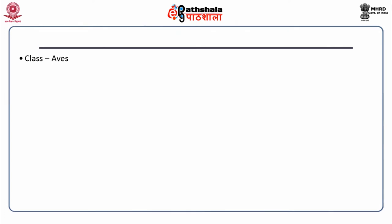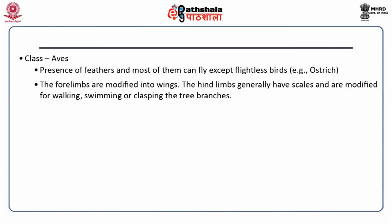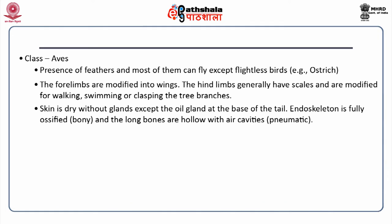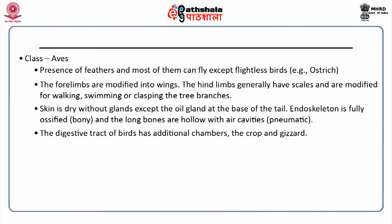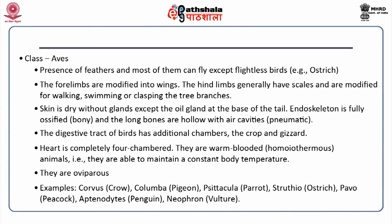Class aves is a special class. The presence of feathers distinguishes them, and most can fly except flightless birds like ostrich. Forelimbs are modified into wings. Hind limbs generally have scales and are modified for walking, swimming or clasping tree branches. Skin is dry without glands except the oil gland at the base of the tail. Endoskeleton is fully ossified with hollow pneumatic bones. The digestive tract has additional chambers — the crop and gizzard. The heart is completely four-chambered. They are warm-blooded homeothermous animals and oviparous. Examples include corvus, columba, psittacula, struthio, pavo, aptenodytes and neophron.